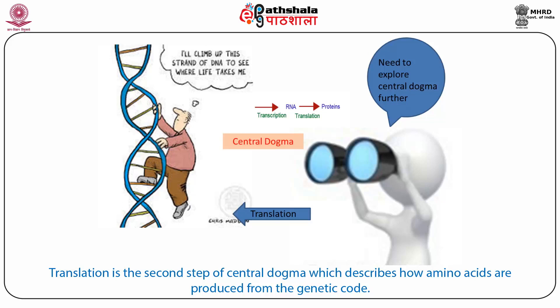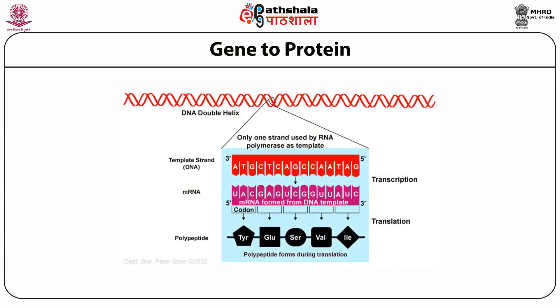Translation is the second step of central dogma which describes how amino acids are produced from the genetic code — from gene to protein. The sequence of nucleotides — adenine, guanine, cytosine and thymine — joined together in sets of three to code for the 20 known amino acids. George Gamow proposed that each amino acid is coded by three nucleotides, known as the codon.